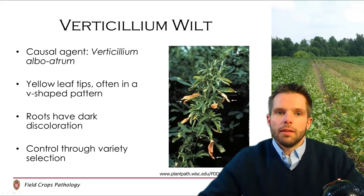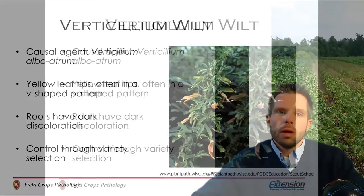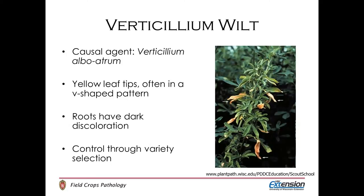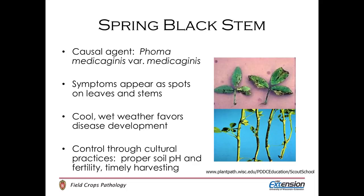Another disease on alfalfa would be verticillium wilt, which is caused by Verticillium albo-atrum. When you notice a yellow leaf tip and a V-shaped pattern on the leaves, you're going to want to go ahead and inspect the plants further, especially the root systems, as they will oftentimes have a dark discoloration on the root. Control for this disease is again going to be through variety selection.